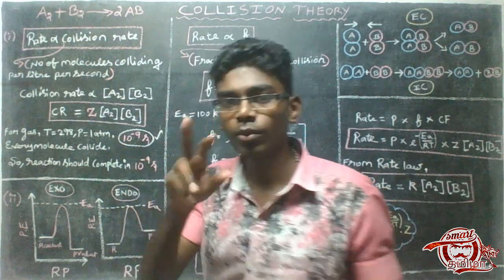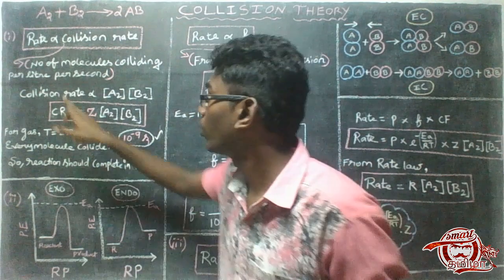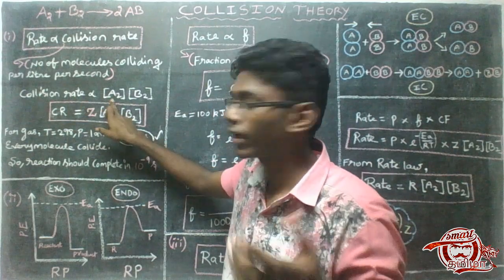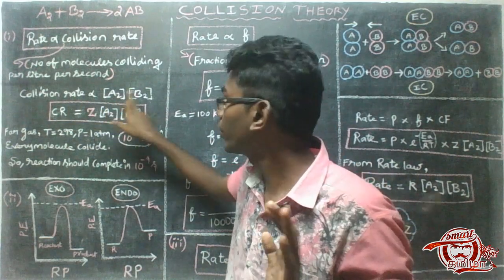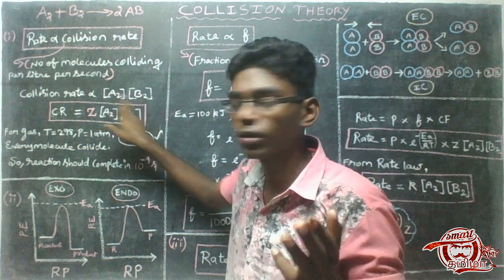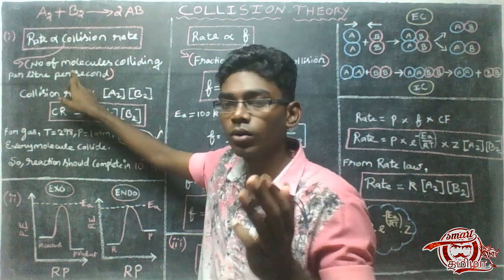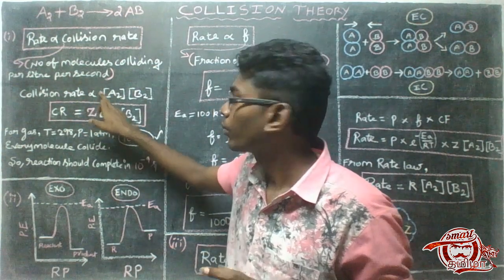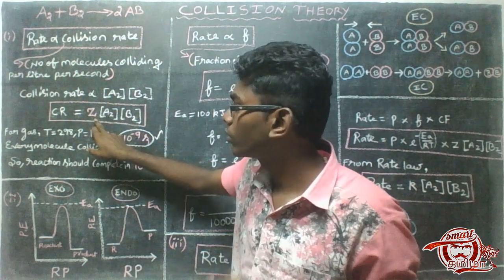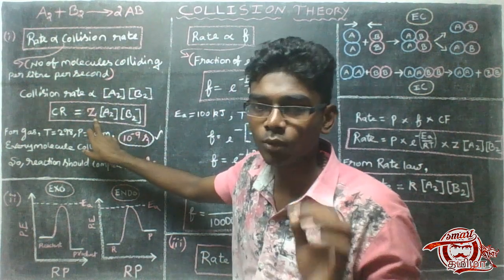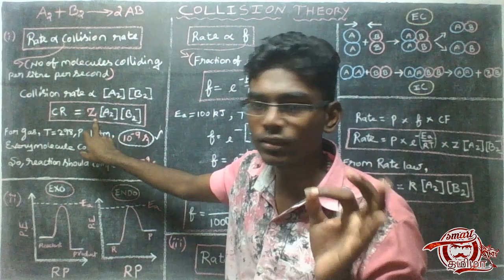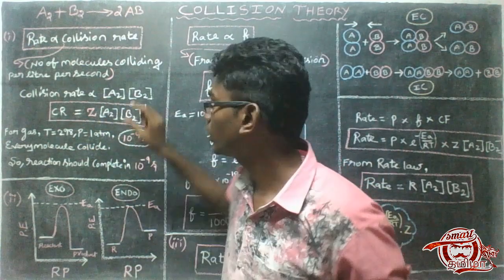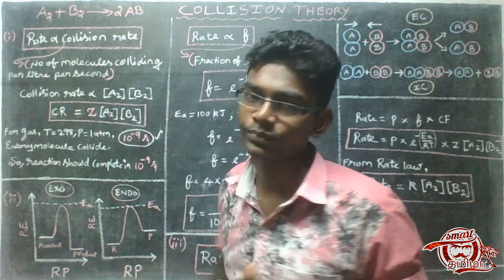So why are we proportional to this? If you have the same concentration, the same thing — the proportionality. The proportionality concentration is equal to Z. Now, what you have to do with collision rate.